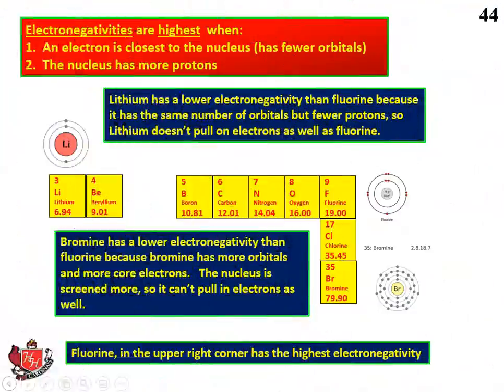Electronegativities are highest when an electron is closest to the nucleus — that is, when the atom has fewer orbitals, because it feels the pull of the protons more strongly — and when the nucleus has more protons. Lithium has a lower electronegativity than fluorine because it has the same number of orbitals but fewer protons, so lithium doesn't pull on outside electrons as well as fluorine. Bromine has a lower electronegativity than fluorine because bromine has more orbitals and more core electrons, so the nucleus is screened more and can't pull in electrons from the outside as well.